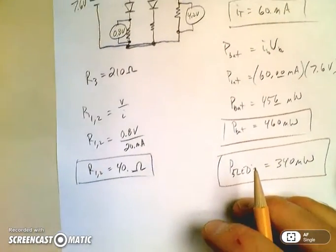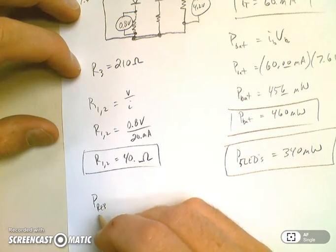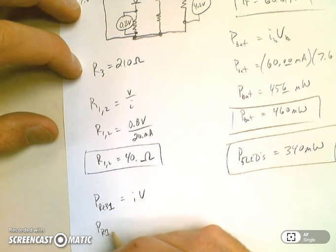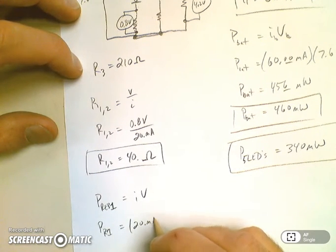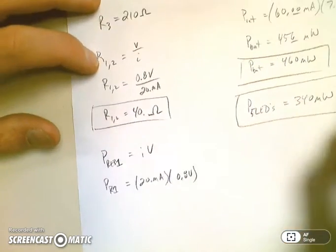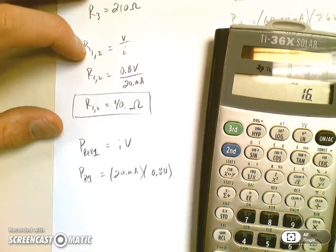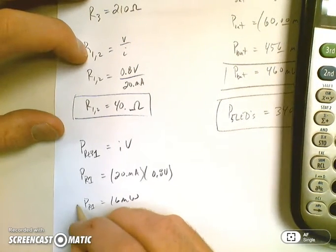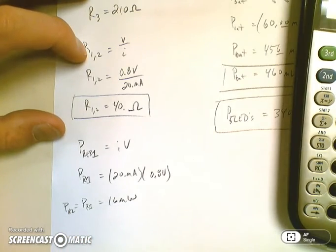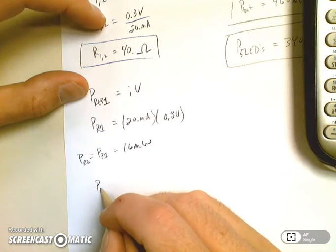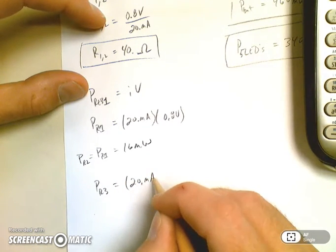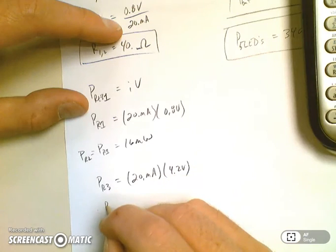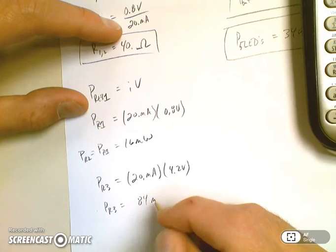Now let's look at the power through the resistors. I'm going to do resistor one first. It's going to be IV, so its current is 20 milliamps, its voltage is 0.8 volts. So 20 times 0.8 is 16 milliwatts, and that's also the power through resistor two because they're the same. And then power through resistor three is equal to 20 milliamps times 4.2 volts, which we've already calculated in our last problem, and that's 84 milliwatts.